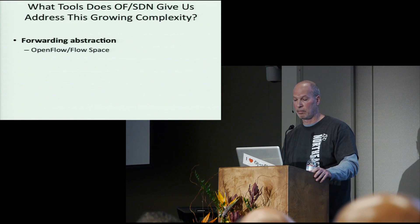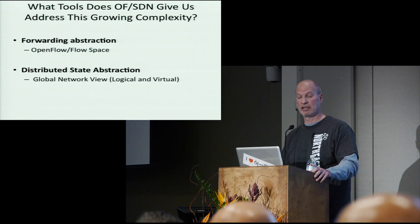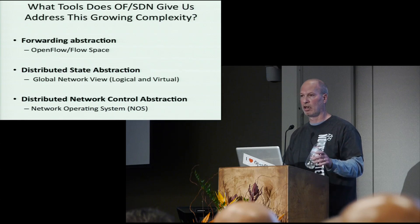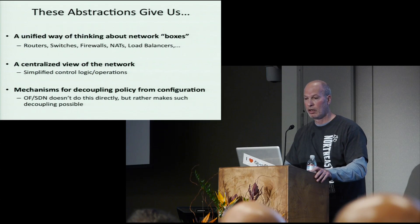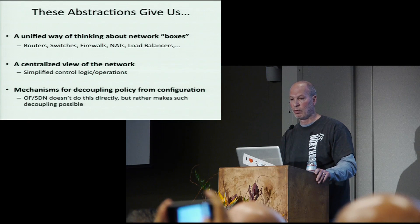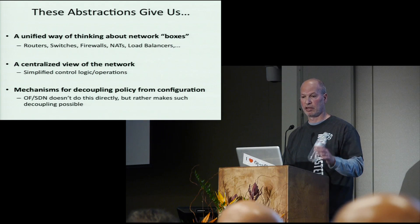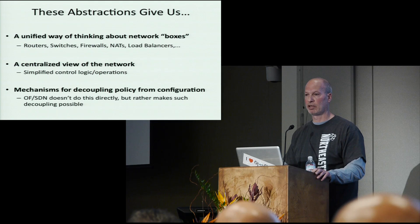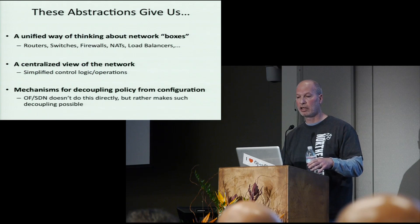What tools do we get from SDN and OpenFlow to address all of this? We have the forwarding abstraction — that's OpenFlow, or the flow space. We have distributed state abstractions — a global network view, logical or virtual. And we have a distributed network control abstraction — the controller, or NOS. With these abstractions we get a unified way of thinking about the boxes in the network: they're just forwarding planes now. We get a centralized view of the network — not a myopic box view, but a logical or even virtual view. And we get mechanisms for decoupling policy from configuration. OpenFlow SDN doesn't do this directly, but it makes it possible.